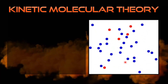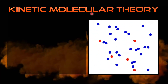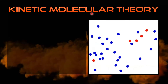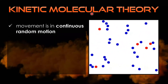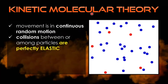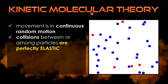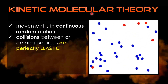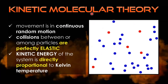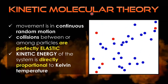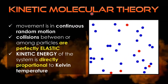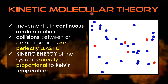Continuing the discussion of KMT, it also posits that the movement of gas molecules is continuous random motion. They move in a straight path, and when they bounce off surfaces or other molecules, collisions are perfectly elastic. Moreover, the kinetic energy of the system is directly proportional to Kelvin temperature. Hence, when temperature is changed, kinetic energy changes in the same way.